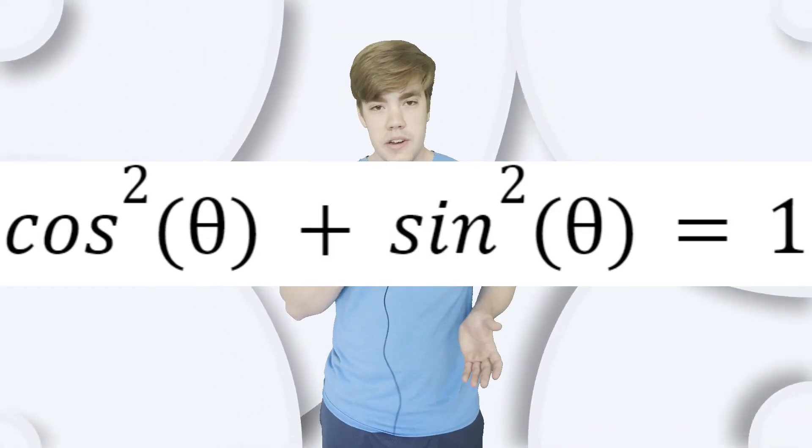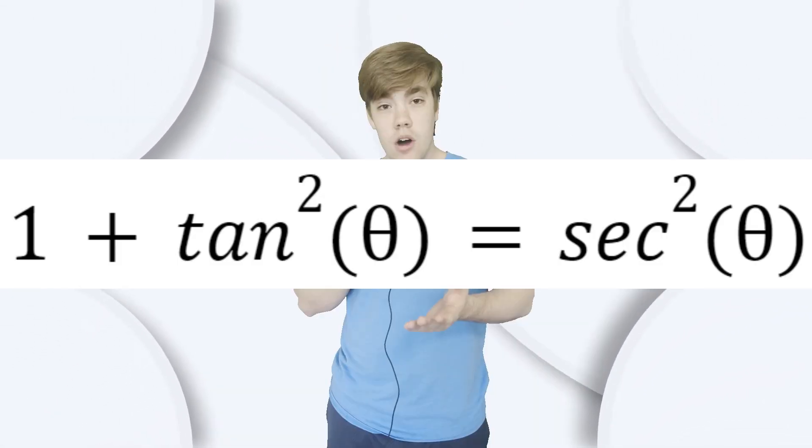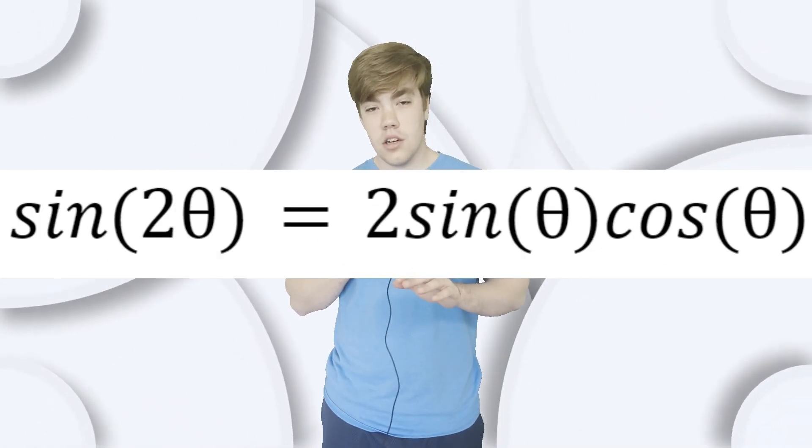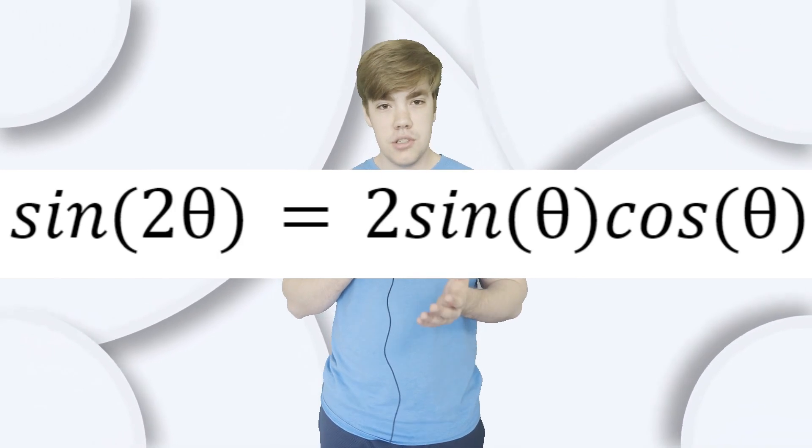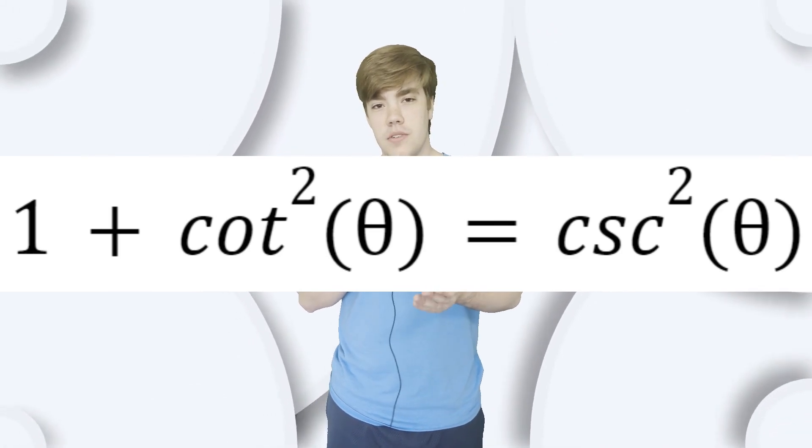I'm also going to go over some trig rules that you will have to know for calculus 1 and 2 especially, but you will use them a little bit in Calc 3 as well. Cosine squared theta plus sine squared theta always equals 1. This can help you cancel out a lot of extra cosines and sines within your function because 1 is so much easier to work with than trig functions. 1 plus tangent squared theta is equal to secant squared theta. Sine of 2 theta, also known as a double angle, is equal to 2 sine theta cosine theta. And finally, 1 plus cotangent squared theta is equal to cosecant squared theta. These will be very helpful, especially in calculus 2. Just trust me, you're going to want to know these.